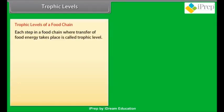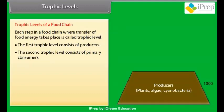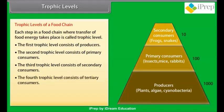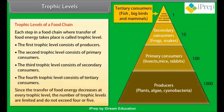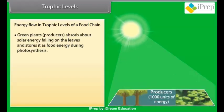Each step in a food chain where transfer of food energy takes place is called a trophic level. The first trophic level consists of producers, the second of primary consumers, the third of secondary consumers, and the fourth of tertiary consumers. Since the transfer of food energy decreases at every trophic level, the number of trophic levels is limited and does not exceed four or five.